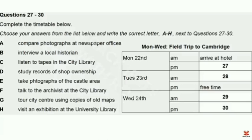Now you have some time to look at questions 27 to 30. Now listen to the rest of the conversation and answer questions 27 to 30. Now, let's think about the field trip and at least make sure that goes as well as possible. You're going to Cambridge on the 22nd, the Monday. And in the morning you'll be travelling and then getting settled into the hotel. But you need to get down to work after lunch. I've arranged for you to have a look at some useful visual material, especially photographs, and old magazines and newspapers, which is included in an exhibition at the library in the university. That sounds like a good starting point. There's quite a lot on show, so that'll occupy most of the afternoon.